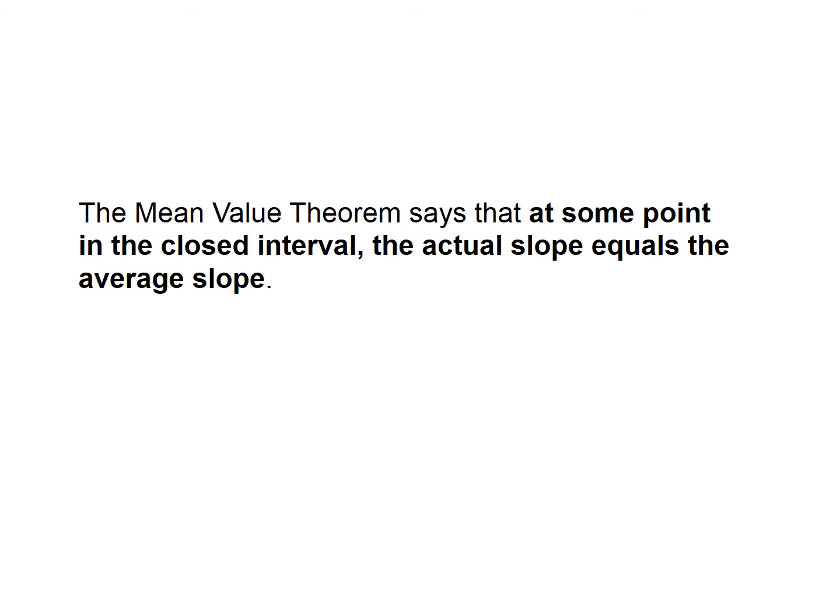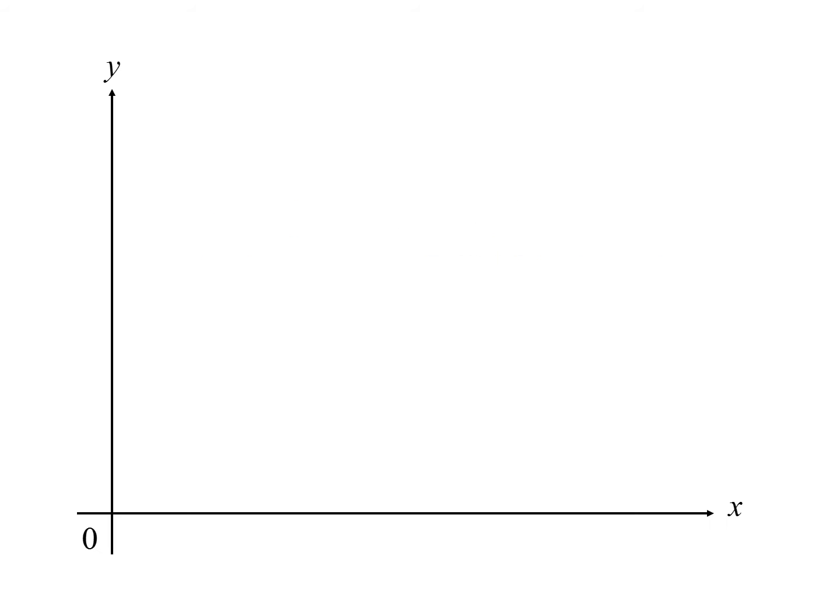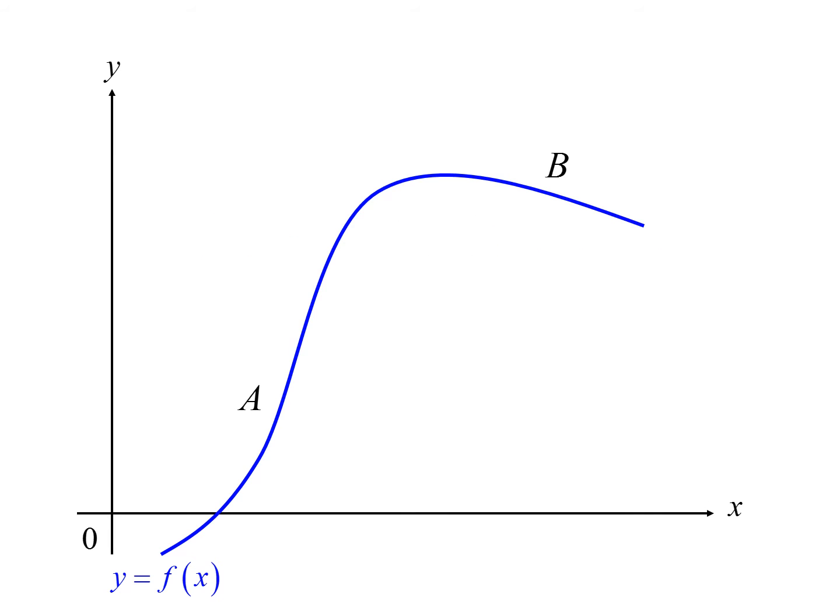Basically what it's saying — let's say you drive from your house to Charlotte and your average rate of change is 50 miles per hour. What the Mean Value Theorem guarantees is that someplace your speedometer had to hit 50 miles per hour. So if your average rate of change is 50 miles per hour, then your instantaneous rate of change had to be 50 miles per hour at some point. The goal of the Mean Value Theorem is to find that point.